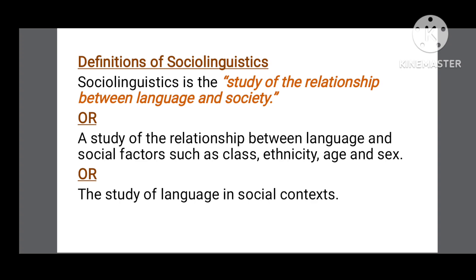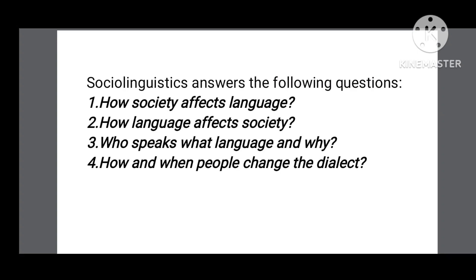The third definition of sociolinguistics is: It is the study of language and social context. As a separate discipline, sociolinguistics answers the following questions: How does society affect language? — because people speak differently according to their class and social context. How does language affect society? — because language shows the age, class, sex, nationality, and ethnicity of a person. Who speaks what language and why? And how and when do people change their dialect? — because the same language has different dialects and people change dialects according to their social context and needs.